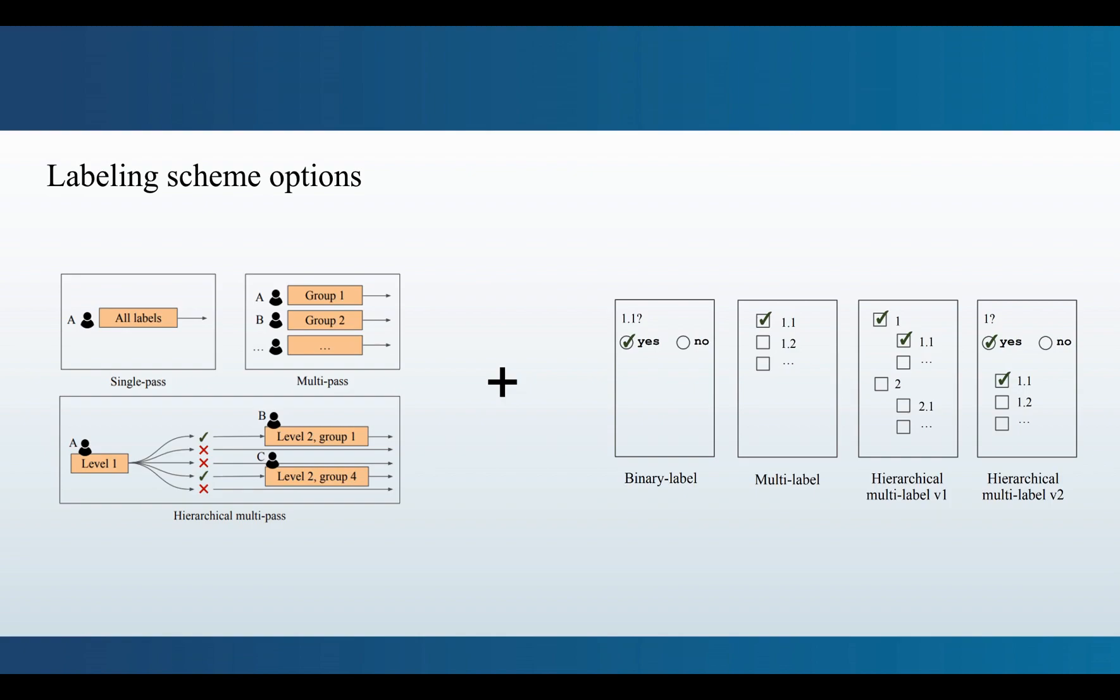This label data becomes our ground truth and we use it to evaluate whether the annotations by crowdsource workers are correct or not. The labeling pipeline is done through Amazon Mechanical Turk, so let's look at a selection of the results.